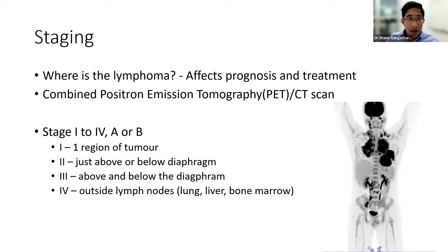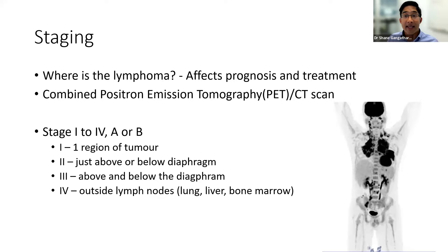We stage from stage 1 to stage 4. Stage 1 is just one single spot of tumour. Stage 2 is all tumours just above or below your diaphragm — around the middle of your body. Stage 3 is above and below the diaphragm. Stage 4 is where it's involving things outside the lymph glands, such as lung, liver or bone marrow. You'll hear us use the term stage A or B — the B refers to whether the patient has B-type symptoms.